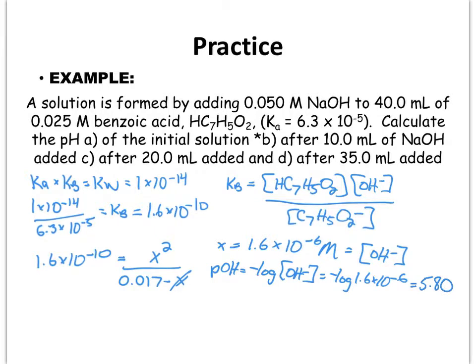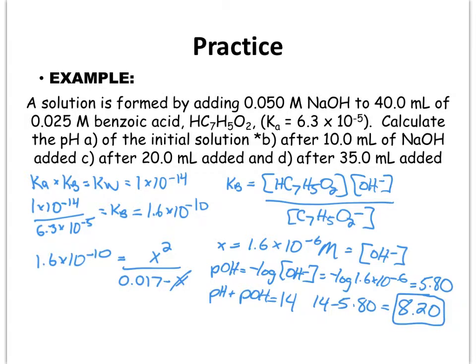We know that pH + pOH = 14, so pH = 14 − 5.80 = 8.20. This makes sense — it is above 7 and more basic, which is what we expect for a weak acid–strong base titration. We are not at a pH of 7 at the equivalence point.